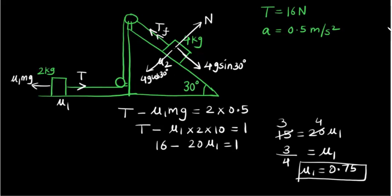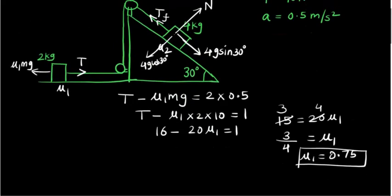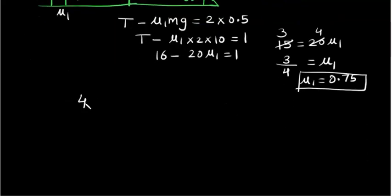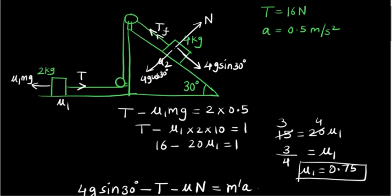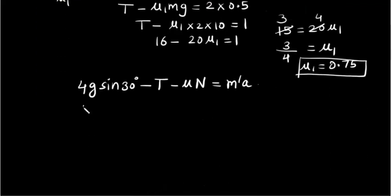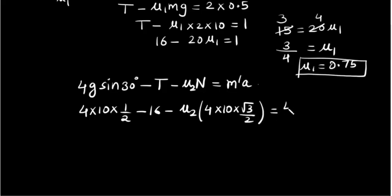Let's write the equation of motion for this. It will be 4g sin 30 minus T minus mu times N is equal to m times a. m is the mass of this one, 4. So it is 4 into 10 into sin 30 minus 16 minus mu2 into 4 into 10 cos 30. cos 30 is root 3 by 2 is equal to 4 times a.